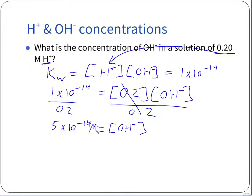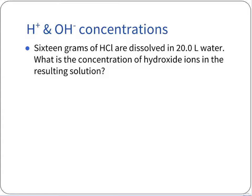Technically with two sig figs on 0.020, we'd say 0.50×10⁻¹⁴ molar as our hydroxide concentration. Next problem: we have 16 grams of hydrochloric acid dissolved in 20 liters of water. What's the concentration of hydroxide ions in the resulting solution? We should write out our equation and figure out what's going on.